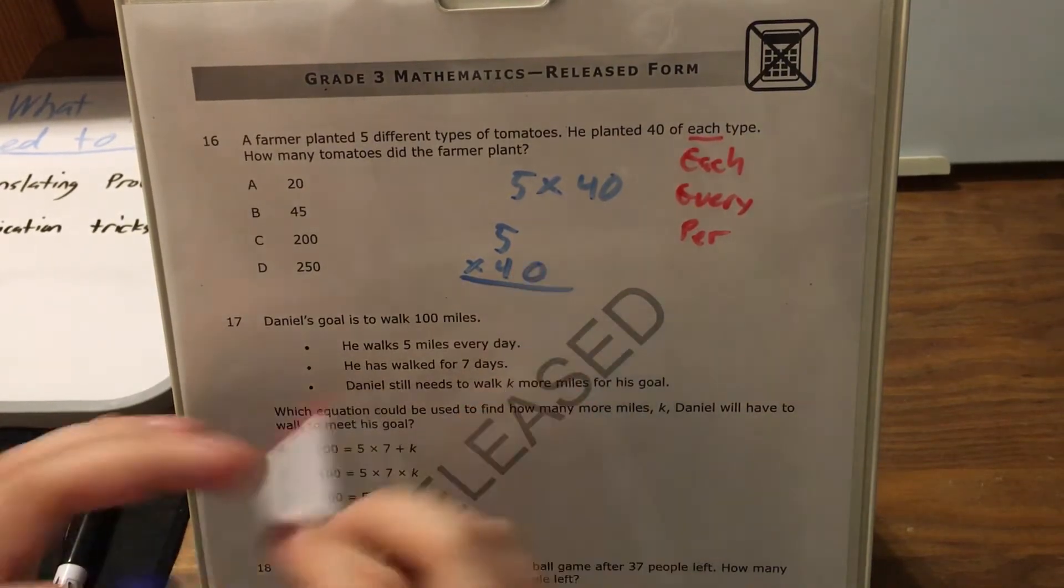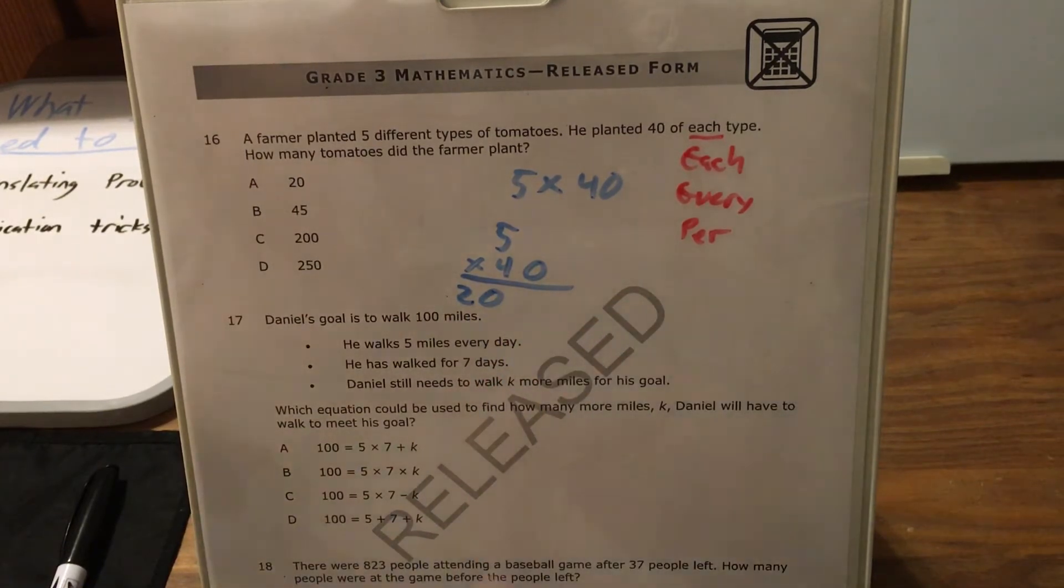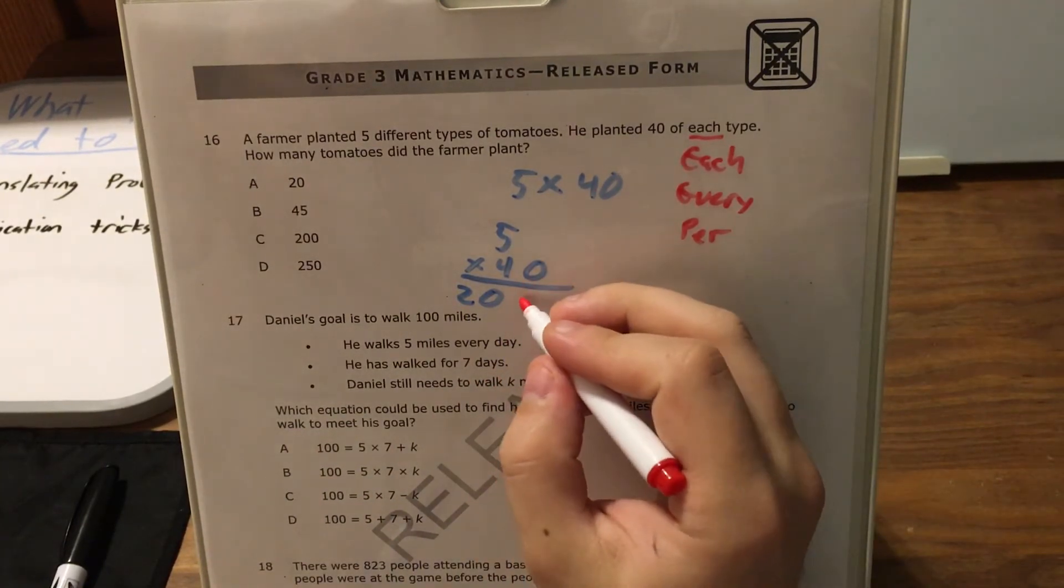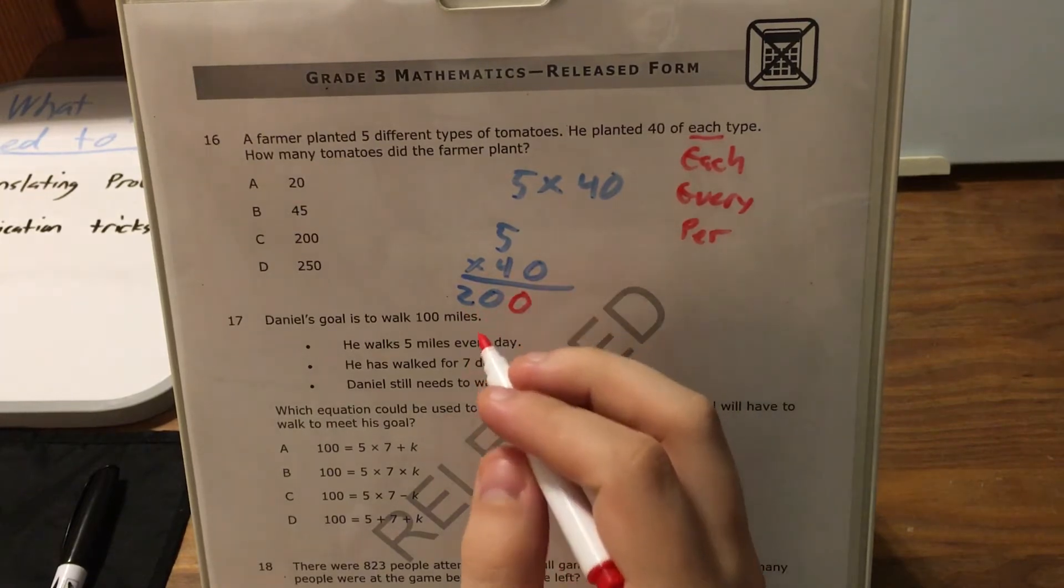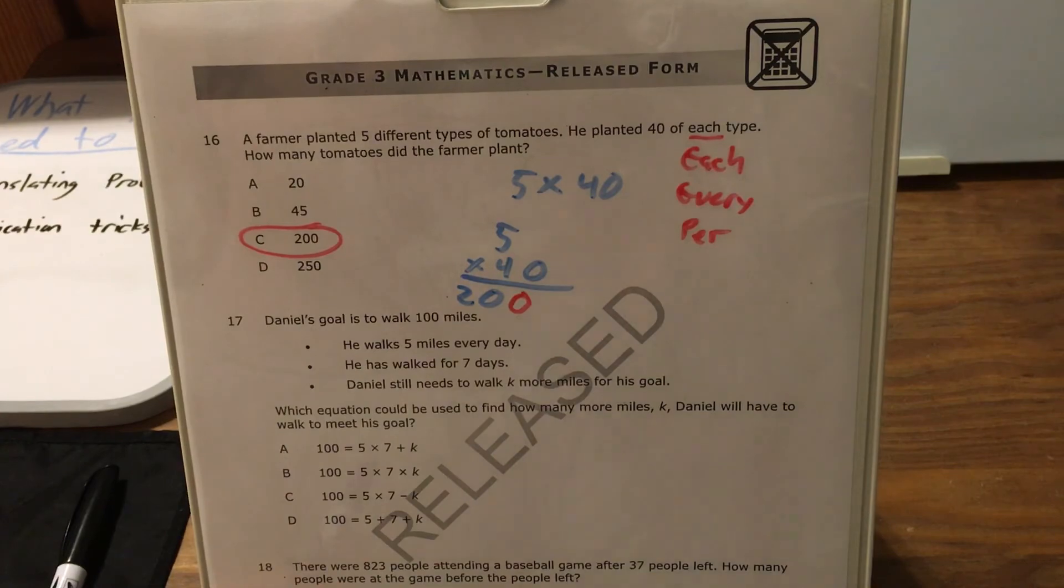So I'm going to pretend this zero isn't here, and I'm going to say 5 times 4, oh, that's 20. So that's 20, and now I'm going to take my zero and just bring it back, and this gives me 200, which matches answer choice C.